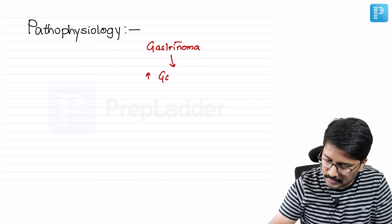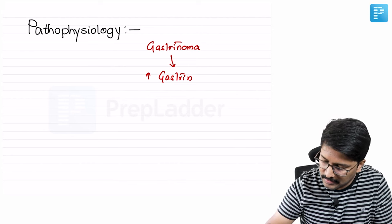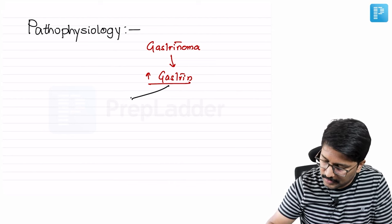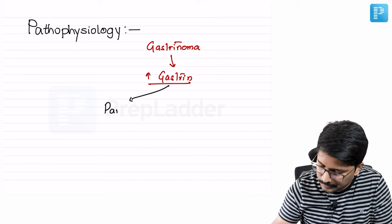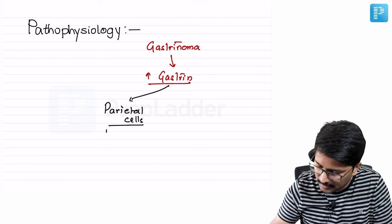That is secreting increased amount of gastrin. This increased amount of gastrin can do two things. One, it can stimulate our parietal cells directly, and when it stimulates parietal cells directly, it causes parietal cell hyperplasia.